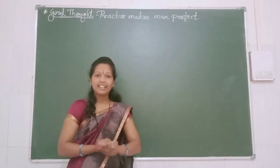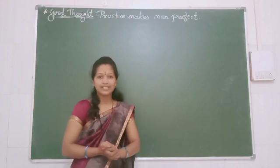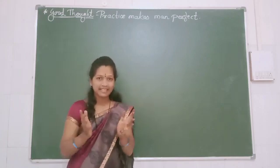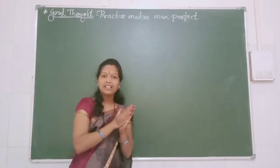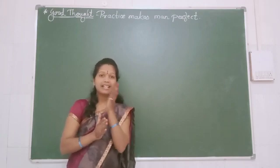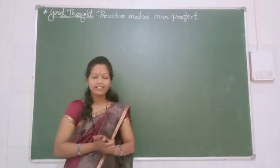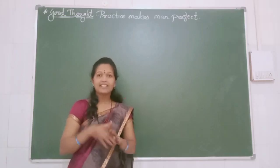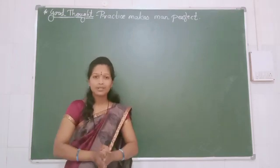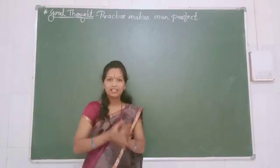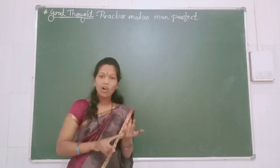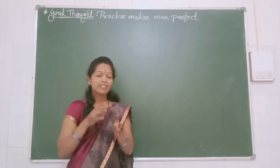So just take the revision of 4th standard. In 4th standard we have learnt so many things, just like geometrical figures — acute angle, right angle, obtuse angle, triangle, their sides, their angles and vertex also. Then circle, center of the circle, chord, radius, diameter.